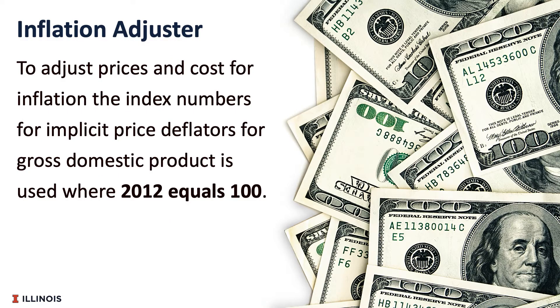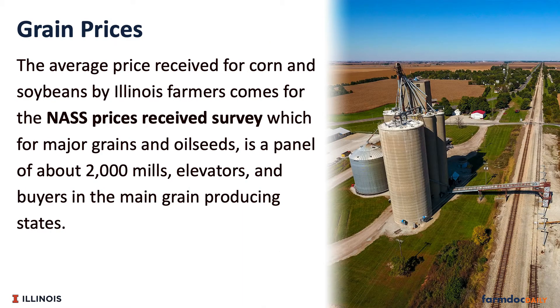Data. Inflation Adjuster. To adjust prices and costs for inflation, the index numbers for implicit price deflators for gross domestic product is used, where 2012 equals 100. Grain Prices.